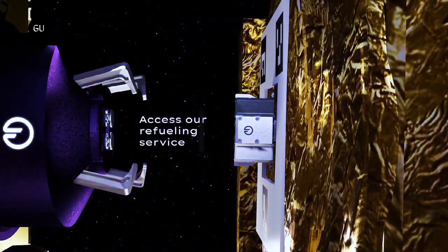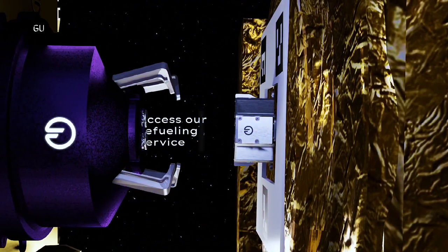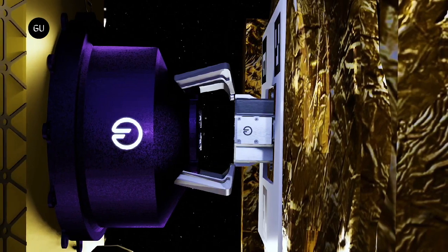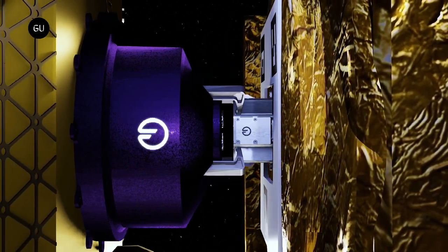The RAFTY satellites are refueled using Orbit Fab's on-orbit fuel shuttles, which can attach to and refuel them. The company is currently working on four fuel shuttle missions that are likely to be launched over the next three years.